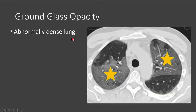Ground glass opacity represents abnormally dense areas of lung that do not obscure underlying bronchovascular structures, and we can see that on the CT on the right. There are areas of abnormally dense lung that do not obscure or distort underlying airways or vessels. This is what we would call ground glass opacity.